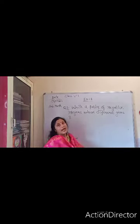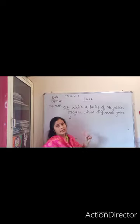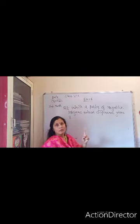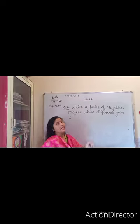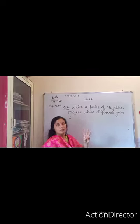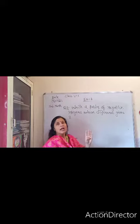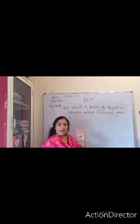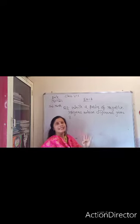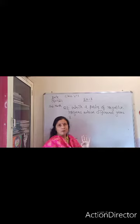I told you that there are basically four properties related to integers. Number one, closure property. Number two, commutative property. Number three, associative property. And number four, additive identity or additive property. Basically, these are the four properties.